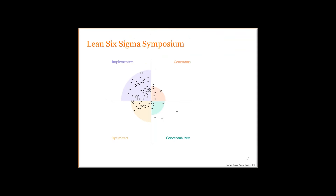At a symposium of 200 Lean Six Sigma people I attended, they filled out the profile, and there's a great preponderance on the implementation and optimization side. If you look at this — people here are in charge of making change — the kinds of changes they're likely to make are most often incremental ones, not the bigger changes possible if they were more open to problem definition.